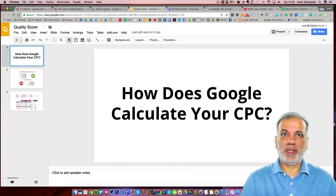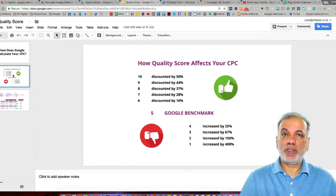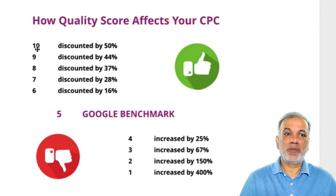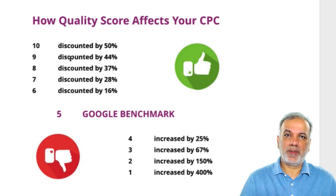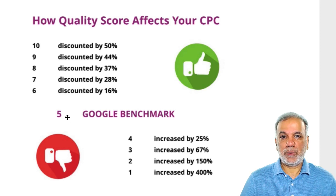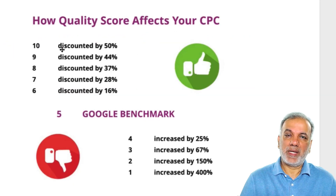I'm going to explain and show you how Google calculates your cost per click. As you may know, every keyword has a quality score between one and ten — one being the worst, ten being the best. You want to aim as high as possible because it's going to affect your cost per click. As your quality score goes up, you get a discount; as it goes down, you get charged more by Google. The minimum you need to start with is five, which is the Google benchmark. Always aim for a minimum of five as your starting quality score, then keep working to make it as high as possible.